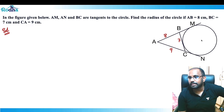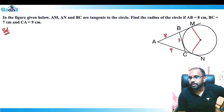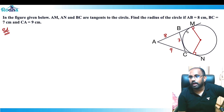Let's say the center of the circle is here. We join the radius to the tangent points. Since the radius and tangent form an angle of 90 degrees, we get two right angles here, and we need to find r.